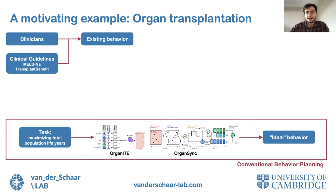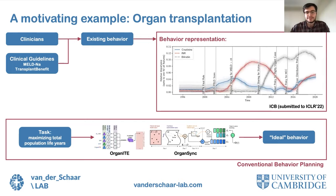Then the pressing question is: how can we make sure the existing behavior is as close as possible to the ideal we have identified using these machine learning methods? How should we update the guidelines we have in order to make practices proposed by methods like Organite and OrganSync more of a reality? The very first step towards answering this question is to describe the existing behavior itself in a quantitative manner, ideally using the same quantities and measures with which we describe our ideal behavior.